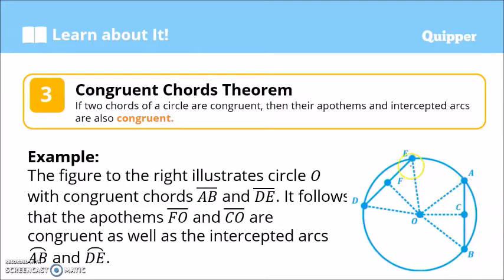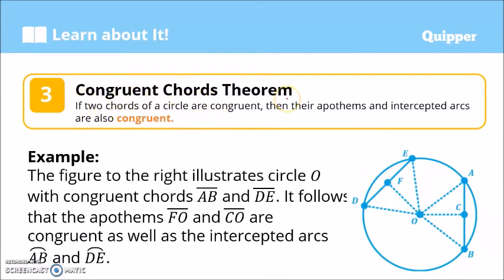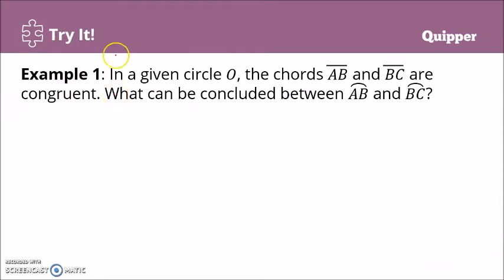For example, if chord AB is 5 units, then chord DE is also 5 units. If the apothem for one chord is 4 units, the apothem for the other is also 4 units. And if one intercepted arc is 45 degrees, then the other arc is also 45 degrees. That is the meaning of the Congruent Chords Theorem.